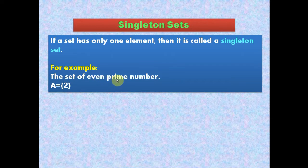For example, the set of even prime numbers. Here we have a set A which has an element 2, which denotes the even prime number. As you can see here, there is only one element for this set, so we can say that this set is a singleton set.